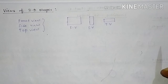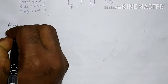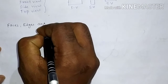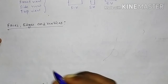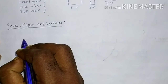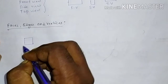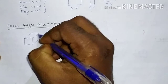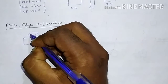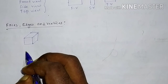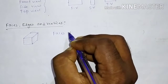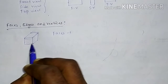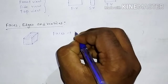The next topic is faces, edges, and vertices. Simply draw a solid shape — a cube — this is a cube or solid shape figure. We have to find faces, edges, and vertices. Faces means flat surfaces. Like this flat surface, and this one, and this one — faces means flat surfaces.